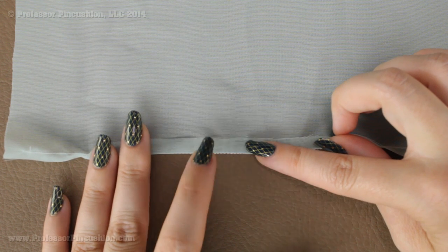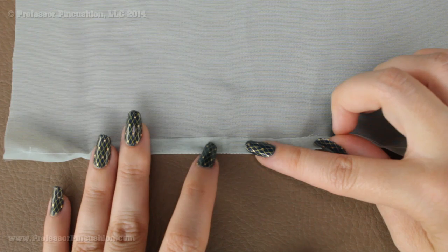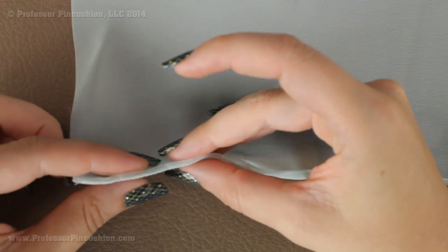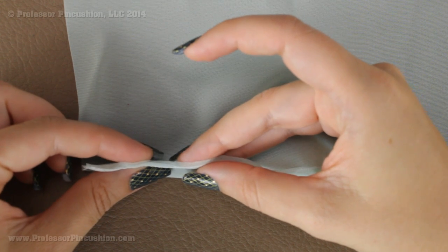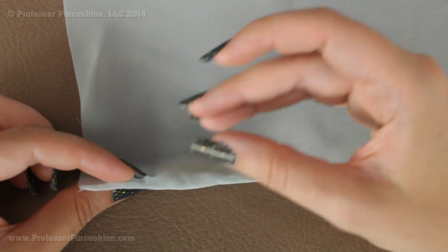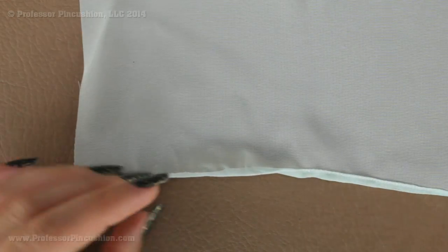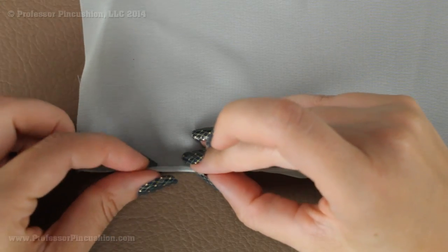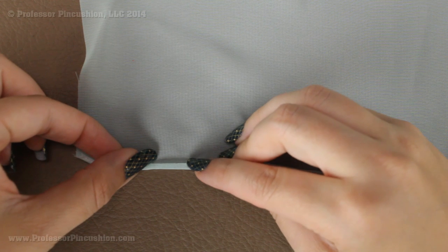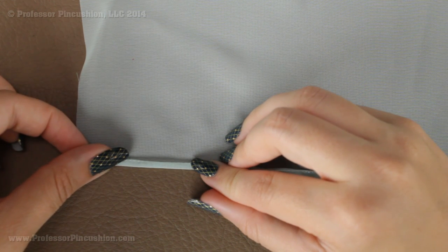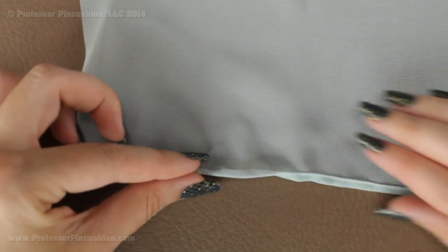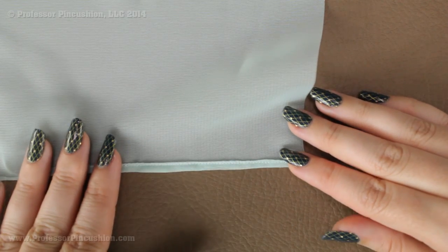So after you press it, you're then going to trim most of your seam allowance off leaving about an eighth of an inch. And I have a little example over here. So this right here has been trimmed and let me just fold it up a little bit so you can see I just left a little bit on there. And if it's not perfectly straight that's fine because we are going to fold it again. So then you're going to take the folded edge with your stitches and you're just going to fold it up and that's going to give you a very tiny hem.